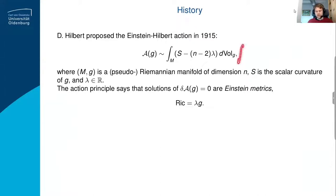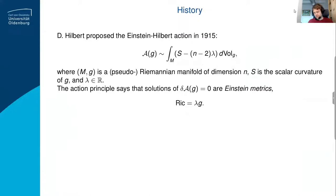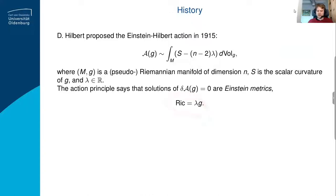If you naively vary this action without worrying about convergence, you'll see that stationary points are given by metrics satisfying the Einstein equation — so-called Einstein metrics. Geometrically, these are interesting metrics with special properties, but they're not as restrictive as constant sectional curvature metrics. It is an ongoing topic to try to find Einstein metrics.